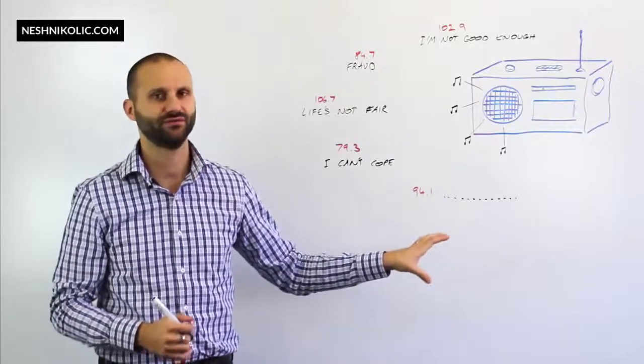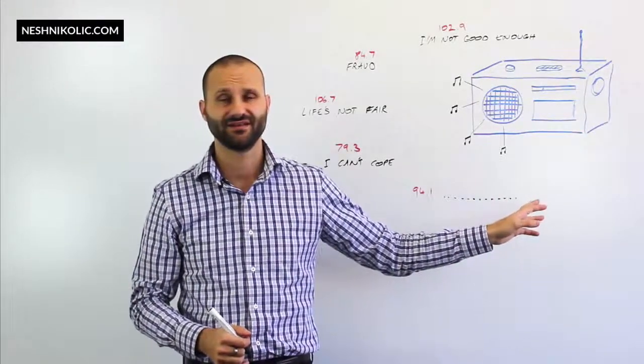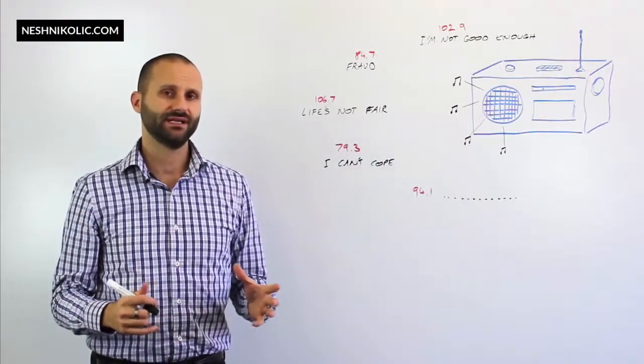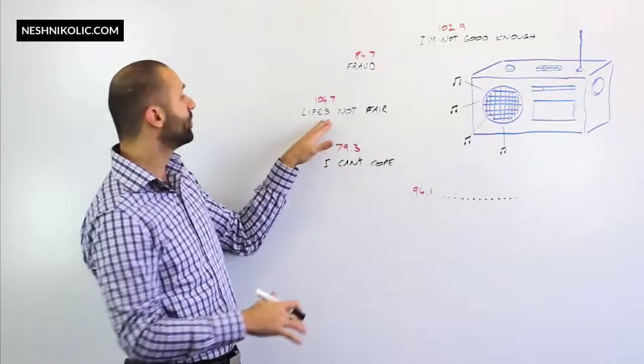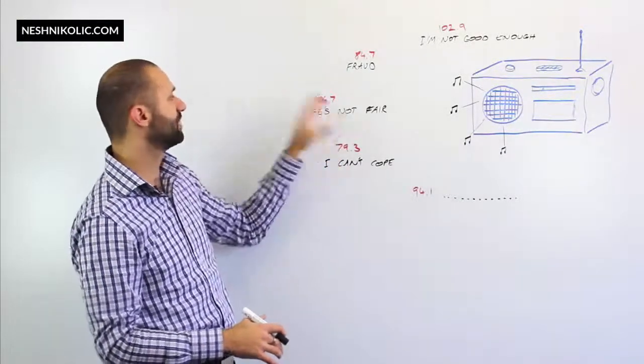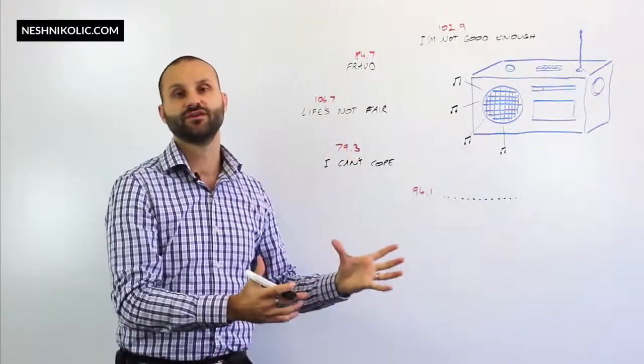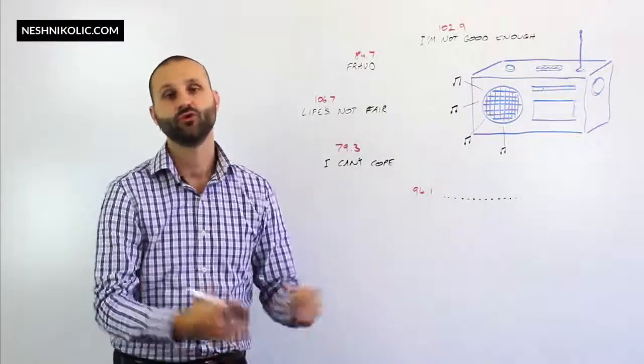94.1 guilt. Now, that's a really powerful one. 94.1 regret. That's something that we don't want to reinforce. And in actual fact, what's occurring is we're trying to get rid of one, which we do. Let's say, for example, life's not fair. We try and get rid of that. And we do that for a short period of time. But then we introduce another one, which will be guilt or regret.